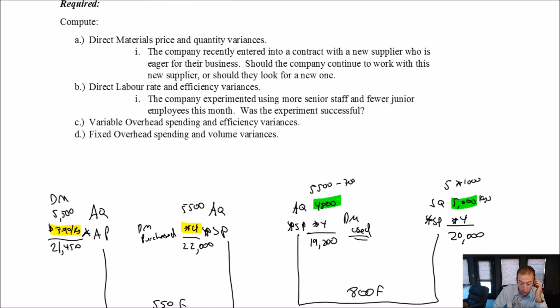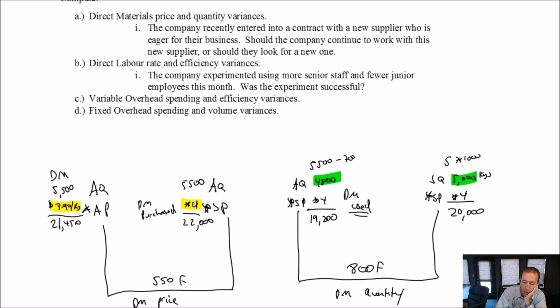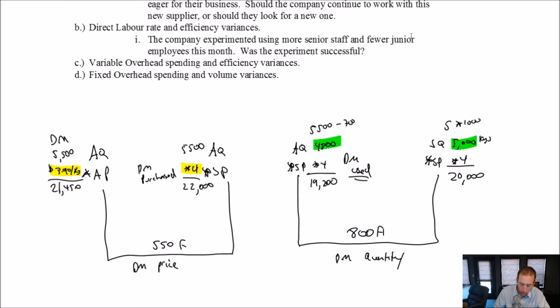So, reading on, question I says, The company recently entered into a contract with a new supplier who is eager for their business. Should the company continue to work with this new supplier, or should they look for a new one? I would say, absolutely, this new supplier looks like a good one. They not only gave us a better price, but when we used their material, we were more efficient than we expected to be. This is a good sign. All else being equal, and we don't know anything else, this is absolutely a supplier we should stick with.